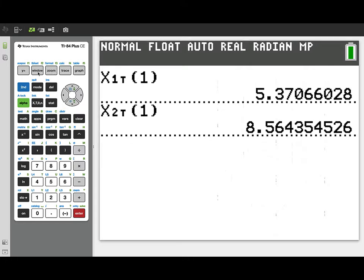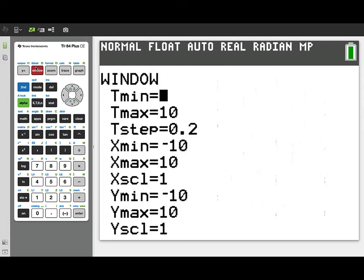Now, we set up these parametric functions so we could actually visualize the movement of the particles. So I'm going to go into the window settings. And let's see, our t interval was 0 to π. So I've set that up. I'm going to go ahead and set the t step to 0.1.